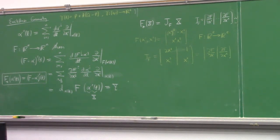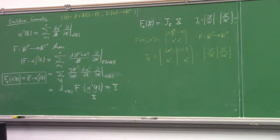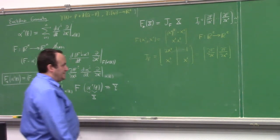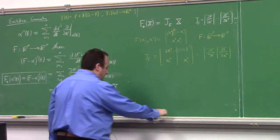The point is this: to push forward a vector under the mapping, we use the components of the Jacobian matrix to tell us how the vectors get pushed forward — specifically how to rotate them.